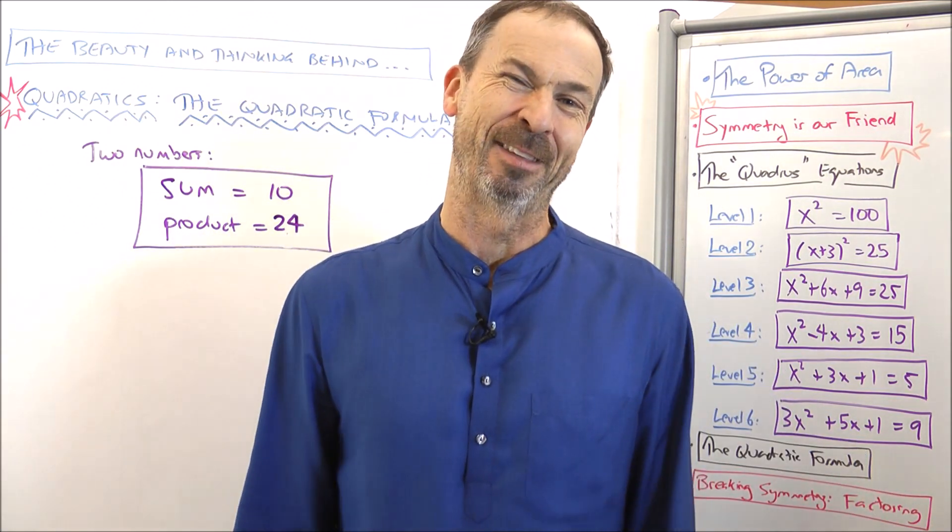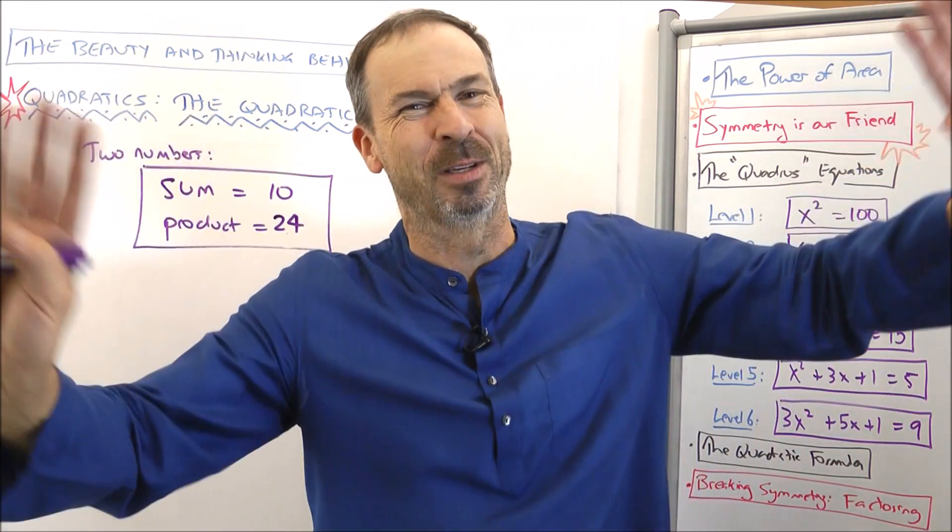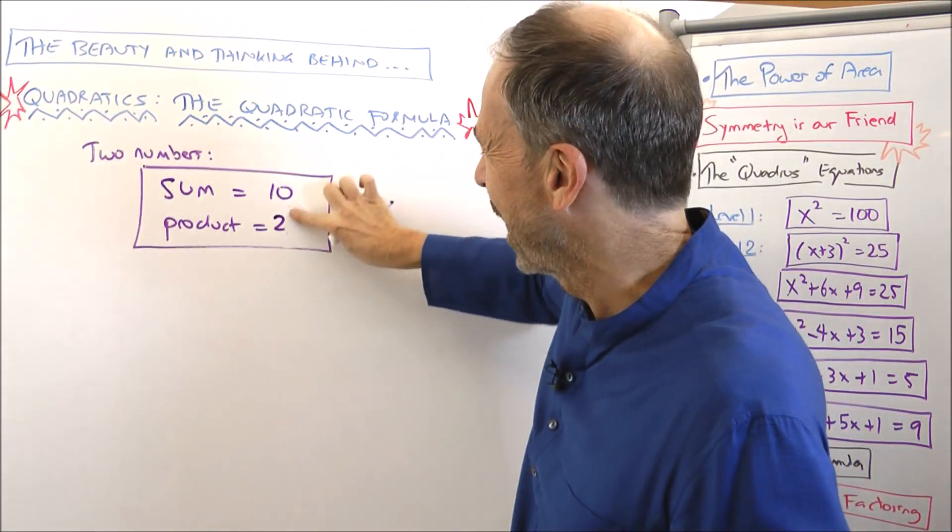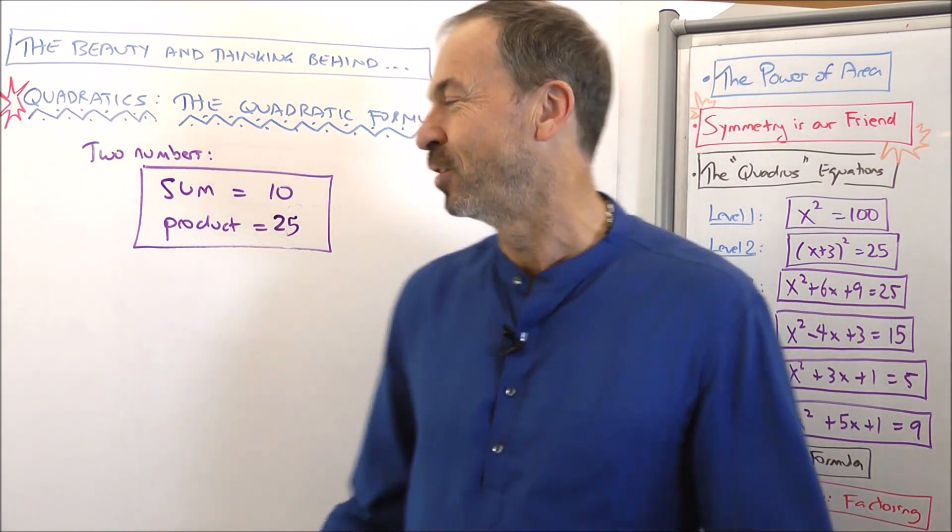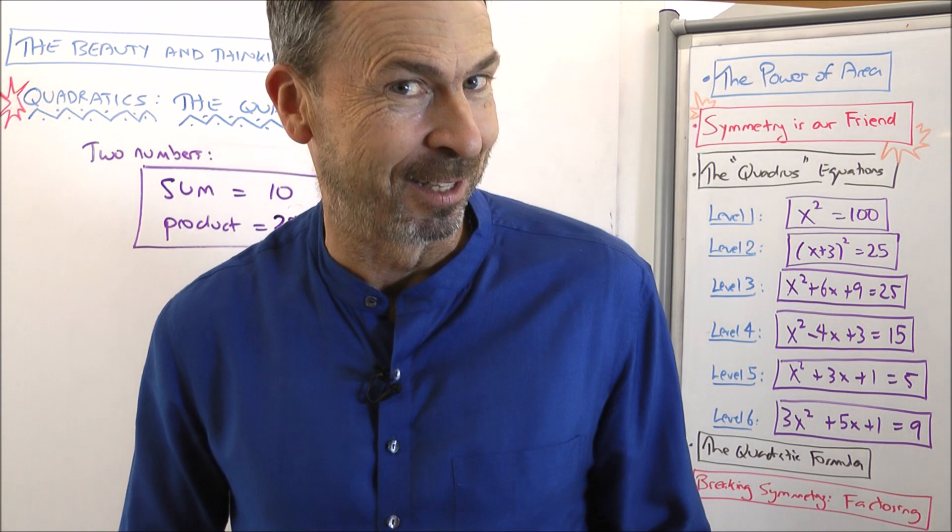Actually, you're probably guessing already. The two numbers are what? 4 and 6? All right, too easy. That wasn't my puzzle. My puzzle is actually not 24. They have a product of 25. Two numbers that sum to 10 whose product is 25. Can you think of them? Well, actually, maybe I'm a little bit sneaky. I never said the two numbers had to be different. So actually, 5 and 5 add to 10 and 5 times 5 is 25.